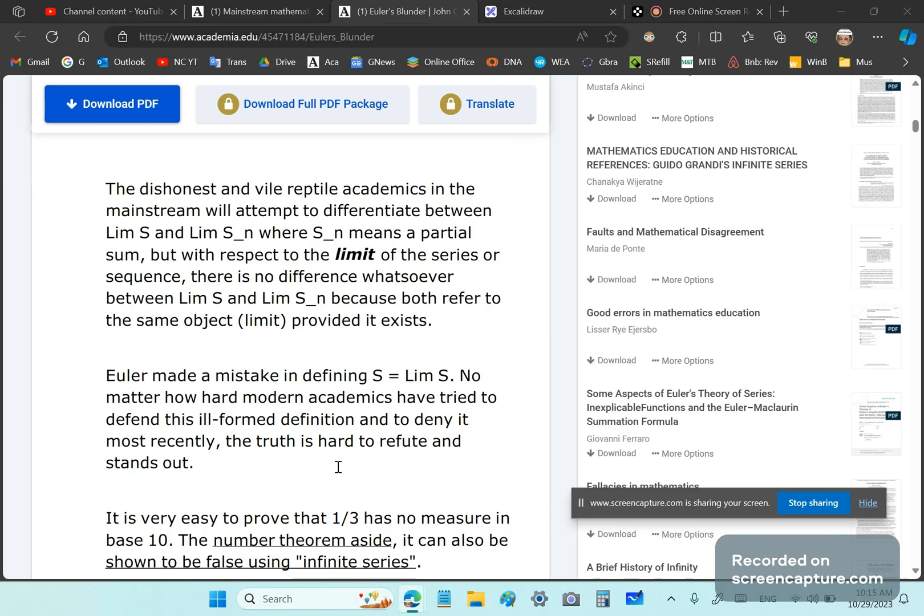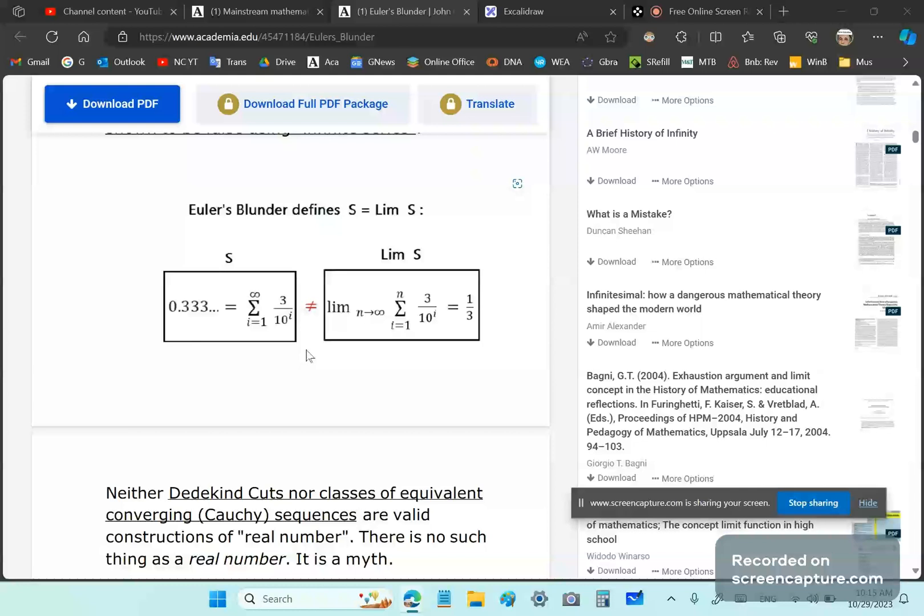Why? Because 3 is not a factor of 10. In order to be measurable in base 10, it must have the prime factors either 2 or 5 and both. So this is totally wrong. And this has been pointed out to the assholes of the Church of Academia for a long time and they still don't get it. So what does Euler's blunder say effectively? It says that the series S, this series which is given by this expression here, is equal. I'm saying it's not equal to, but he's saying it's equal to the limit.